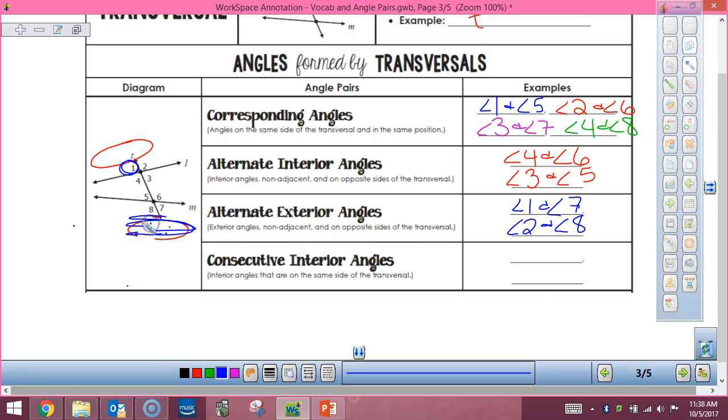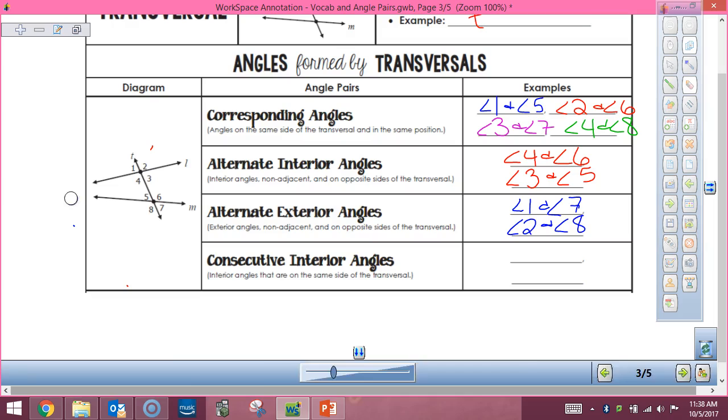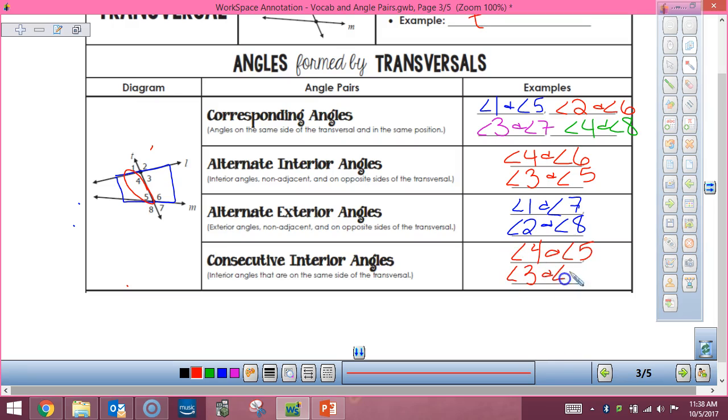So consecutive interior. Again, we're going interior part. And consecutive with these, but they're on the same side as my transversal. So angle four and five. And who else? Angle three and angle six. Sometimes you will see consecutive interior angles called same side interior. That makes sense. So far so good.